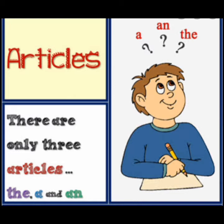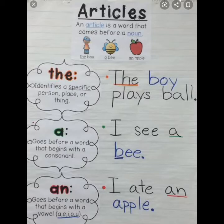'The' is a definite article because it refers to something or someone in particular, or known by everyone — for example: the boy plays ball. 'The' identifies a specific person, place, or thing. 'A' goes before a word that begins with a consonant sound — for example: I see a bee.